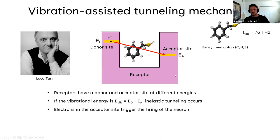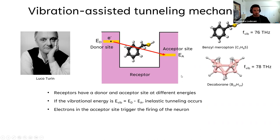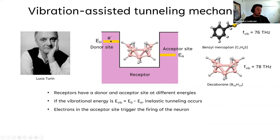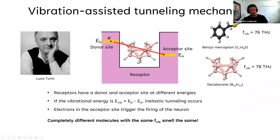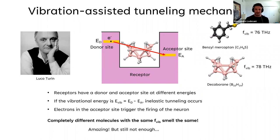To test this, Turin looked at decaborane — a molecule with an entirely different chemical and physical structure from the sulfur-hydrogen compounds. What it shares is a very similar vibrational frequency. The prediction is that the same receptor responsible for the rotten-egg smell should respond to decaborane if the vibrational theory is correct. And indeed, these two completely different molecules smell exactly the same — a huge step forward for the vibrational theory.